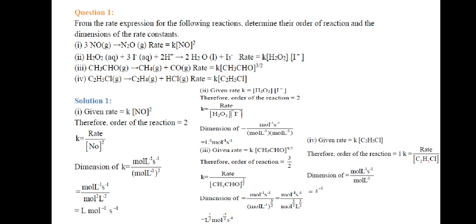Reaction (d): C2H5Cl(g) → C2H4(g) + HCl(g), rate = K[C2H5Cl]. The concentration is raised to the power of 1, so the order of reaction is 1, and for a first-order reaction the unit of the rate constant is s⁻¹.